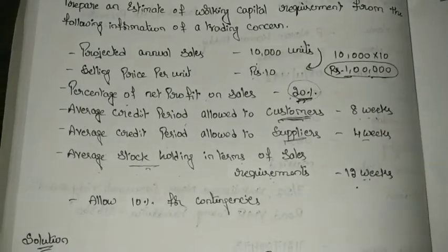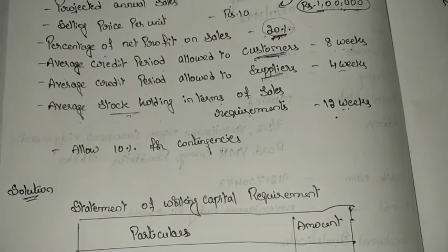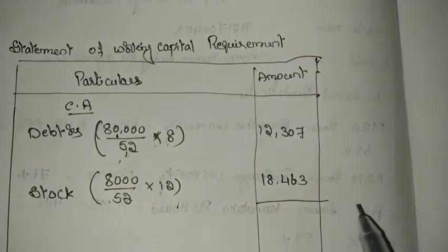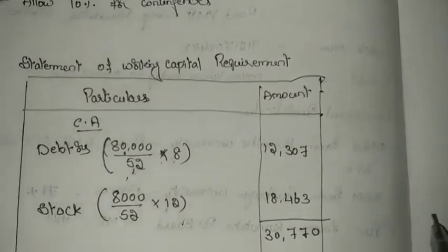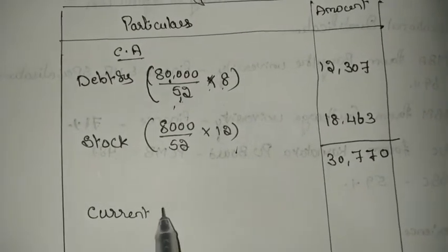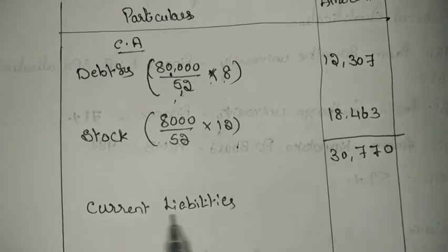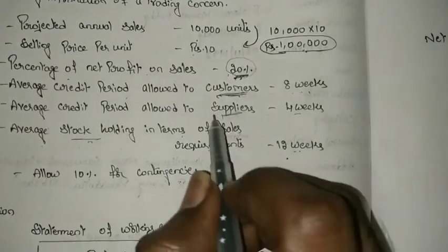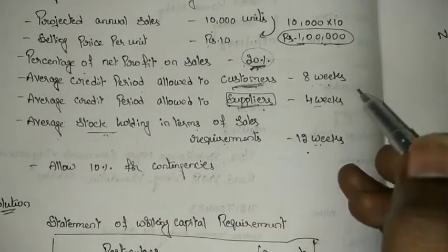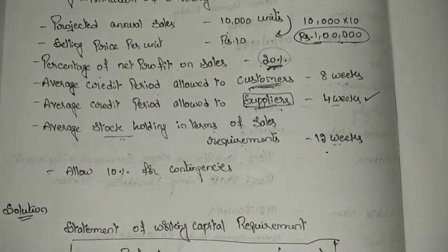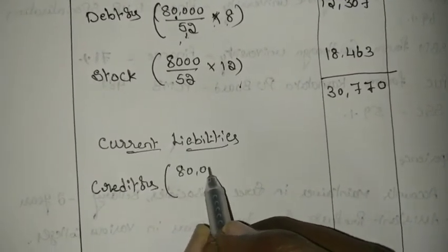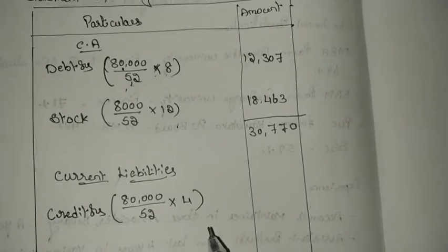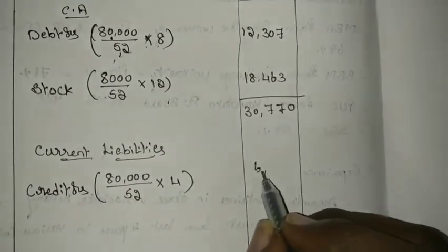These are the two current assets present in this information. Adding them: 12,307 + 18,463 = 30,770, which is the total current assets. Now for current liabilities — only the suppliers (creditors) are present. Creditors = 80,000 ÷ 52 × 4 weeks = 6,154 rupees. This is the total current liabilities.